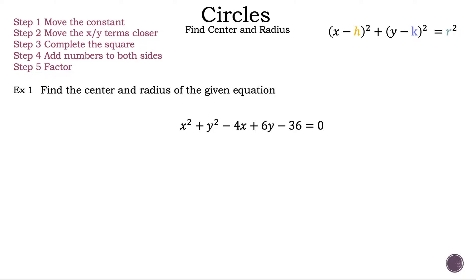Find the center and radius of the given equation x squared plus y squared minus 4x plus 6y minus 36 is equal to zero. Without graphing the equation, one method to find the center and radius is to complete the square. We have the standard equation of a circle on the top right: the quantity of x minus h squared plus the quantity of y minus k squared is equal to r squared, where the center is (h, k) and the radius is r. When we complete the square, we will manipulate the equation so that it can be written as the sum of two single terms squared.